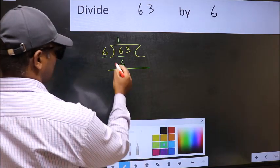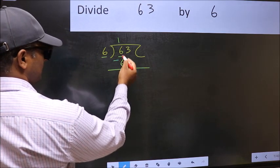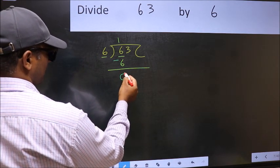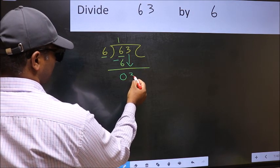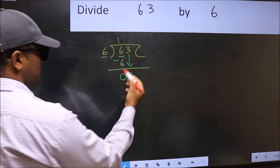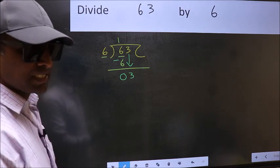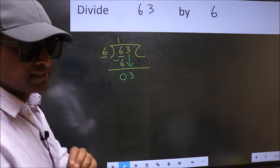Now you should subtract. 6 minus 6, 0. After this, bring down the beside number. So 3 down. After this step, the mistake happens.